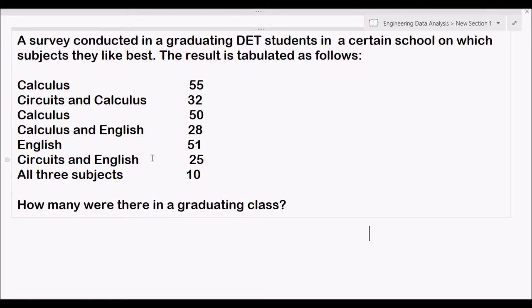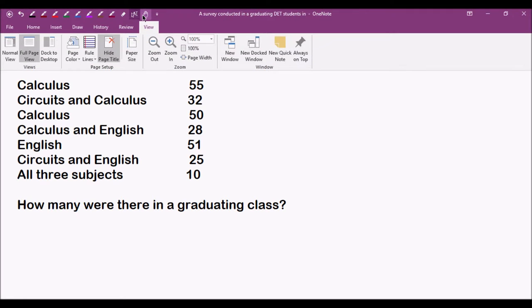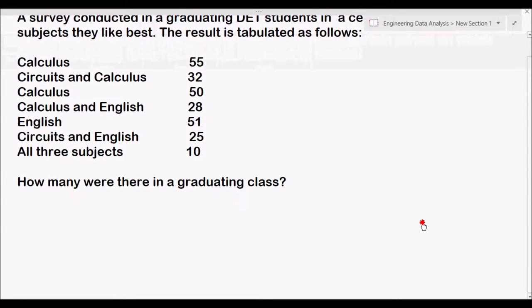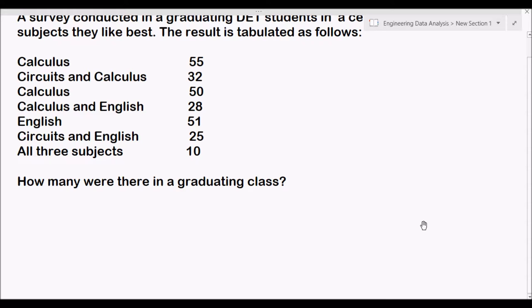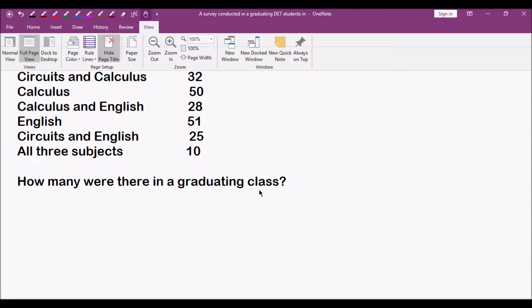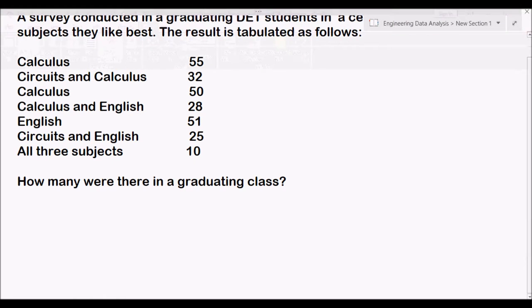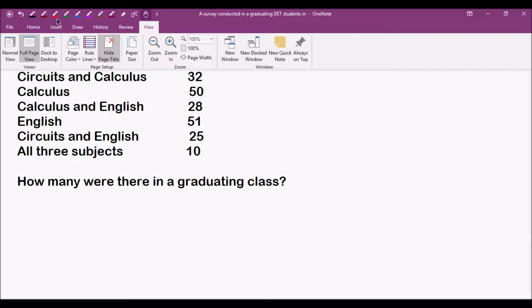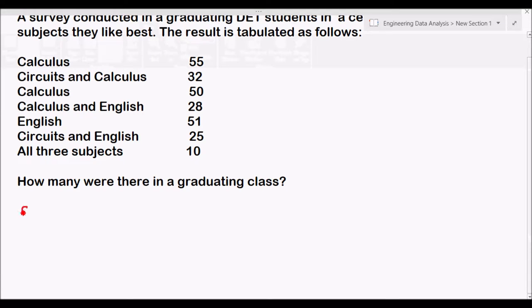We are trying to solve for the total number of graduating students. In this problem, we will attack this problem by using Venn Diagram. The first thing to do is to determine how many events are there. When you see events, how many options or how many selections are there for the survey? There are three.